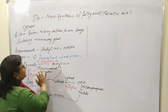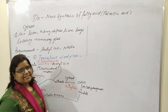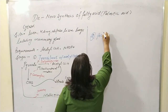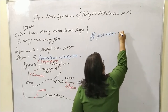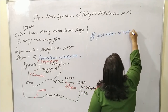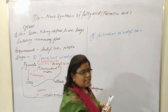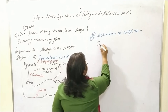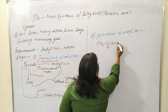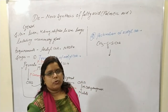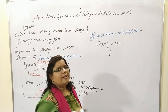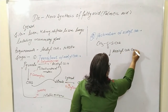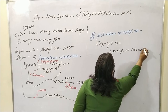With the first step — transport of acetyl coenzyme A — complete, the second step is the activation of acetyl coenzyme A. Here, acetyl coenzyme A is converted into malonyl coenzyme A with the help of the enzyme acetyl coenzyme A carboxylase.